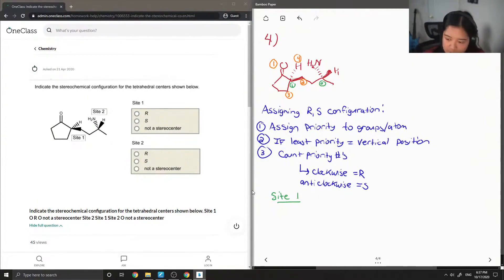So then if I were to write out a basic thing to kind of picture what it would look like, putting the lowest priority in the vertical position. And then once you count from like one to four, you'll notice this goes in a clockwise direction. So therefore site one is R.